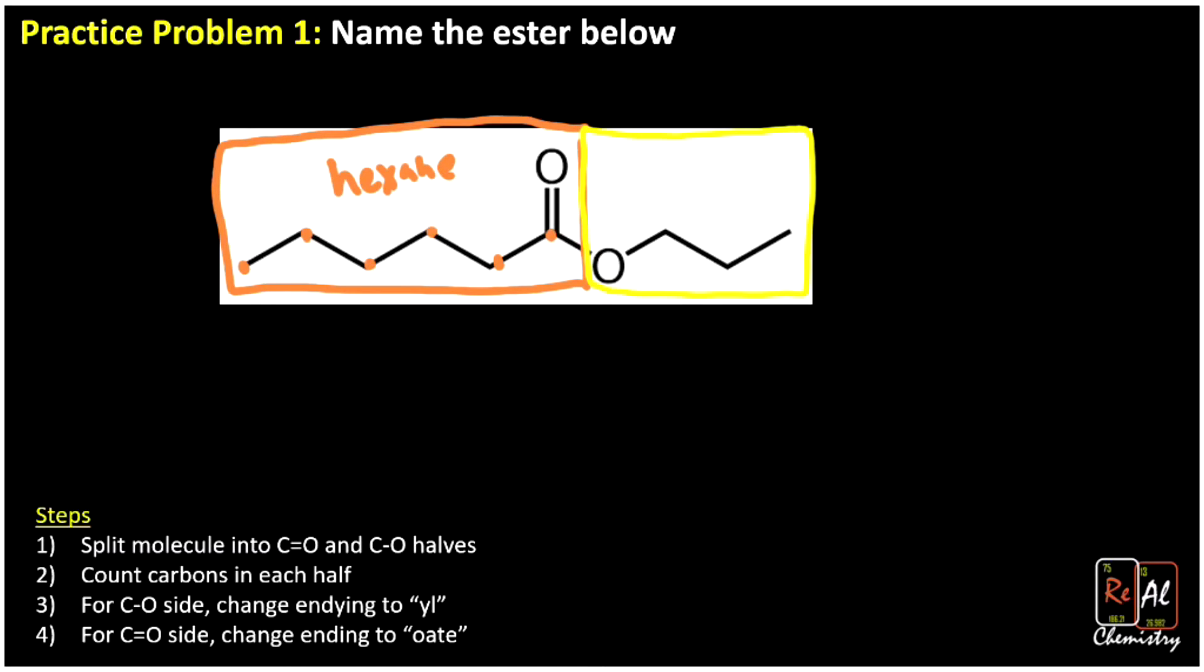And then on the right-hand side, we have 1, 2, 3. And that would give us a propane. So remember, the right-hand side with the C-O single bond. So it's not because it's on the right-hand side. It's because it has the C-O single bond. We're going to change that one to YL, and it becomes propyl.